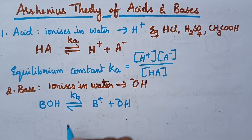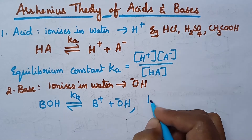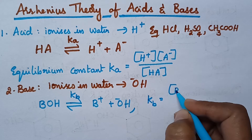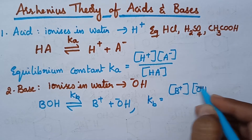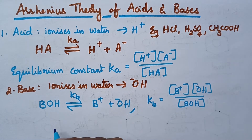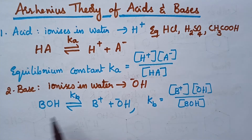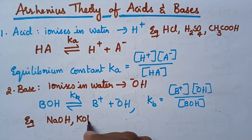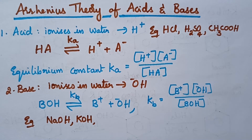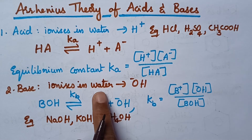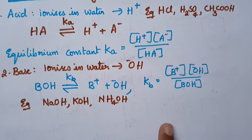Let KB be the equilibrium constant. The value of KB can be given similar to that of Ka — it is the product of molar concentration of products divided by reactants. Coming to the examples of Arrhenius bases, it includes NaOH, KOH, NH4OH, etc. All these can be called as Arrhenius bases since they ionize in water and produce OH- ions.